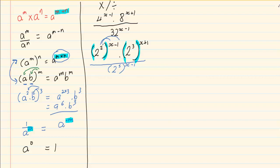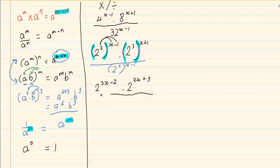The actual answer after expanding the first bracket is 2 to the power of (2x minus 2): 2 times x is 2x, and 2 times minus 1 is minus 2. Doing the same for the next bracket gives 2 to the power of (3x plus 3), all over 2 to the power of (5x minus 5). The rule we applied here is that when we have an exponent outside a bracket we multiply the powers.